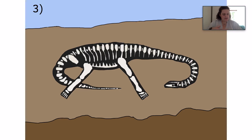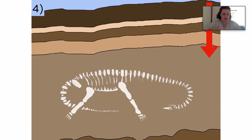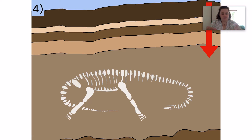Sediments then build on top of the organism, putting a lot of pressure onto the layers above. This therefore solidifies the sediments surrounding the organism — a process called lithification, which is turning to rock.